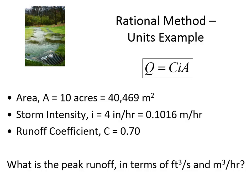For comparison, I'll convert 28 cubic feet per second into cubic meters per hour, since that's what we'll get working in SI. We multiply 28 cfs by 3,600 seconds per hour to get cubic feet per hour, then divide by 35.315 cubic feet per cubic meter. That works out to approximately 2,854 cubic meters per hour.